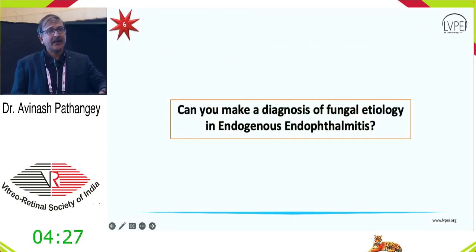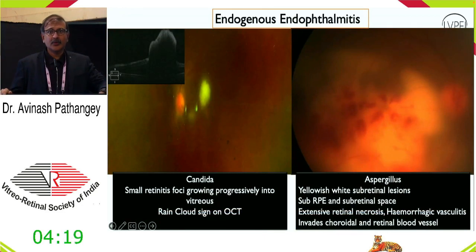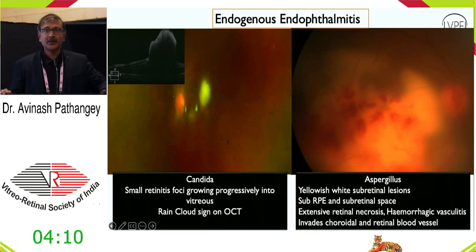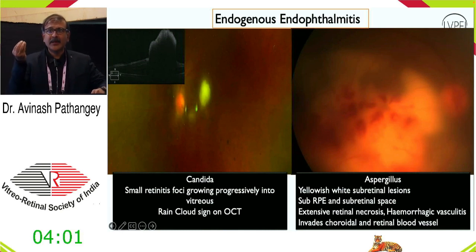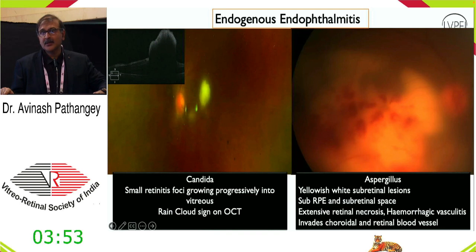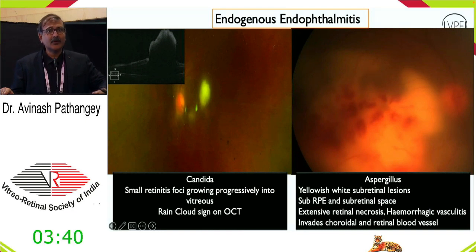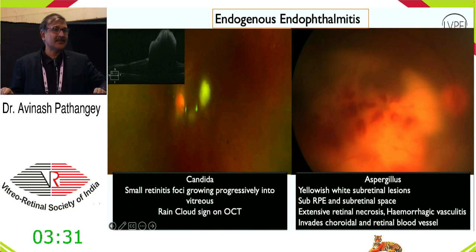In endogenous endophthalmitis, diagnosing possible fungal etiology is very challenging — unlike exogenous. However, both Aspergillus and Candida have distinct patterns. For Candida, there is a focal posterior lesion in the retina or subretinal space that buds slowly. For Aspergillus, it tends to be submacular, presents with dense vitritis, and grows as aggressively as bacteria. If you see something that aggressive, keep Aspergillus high in your differential. The 'rain cloud sign' can make Candida diagnosis easier, but it is not mandatory for diagnosis.